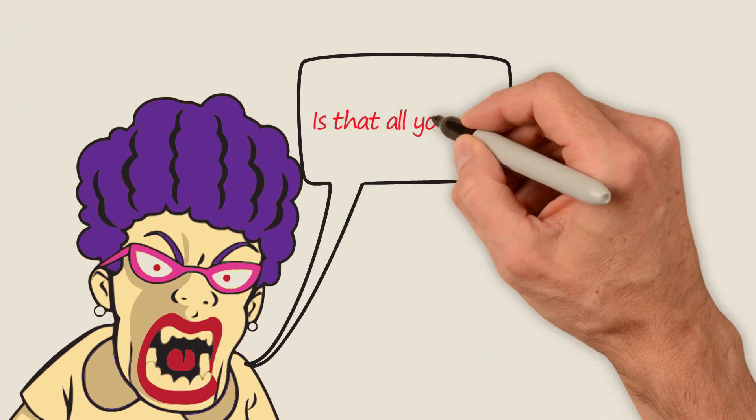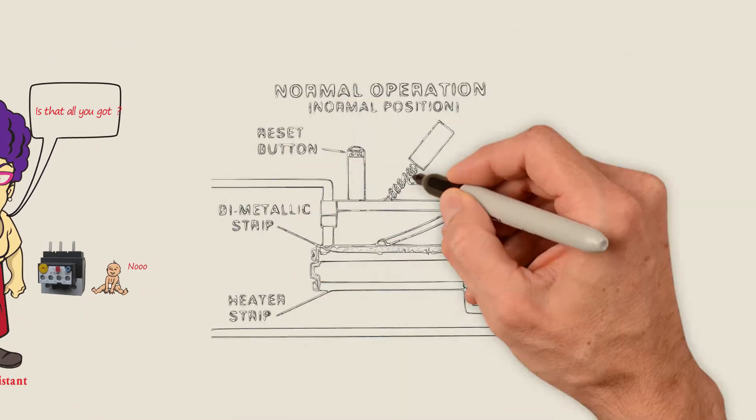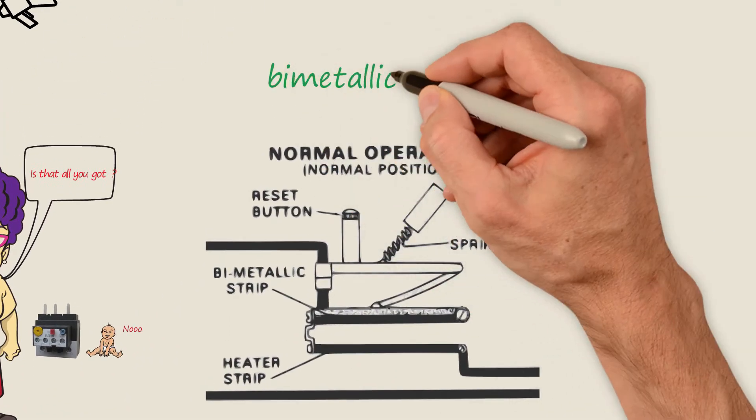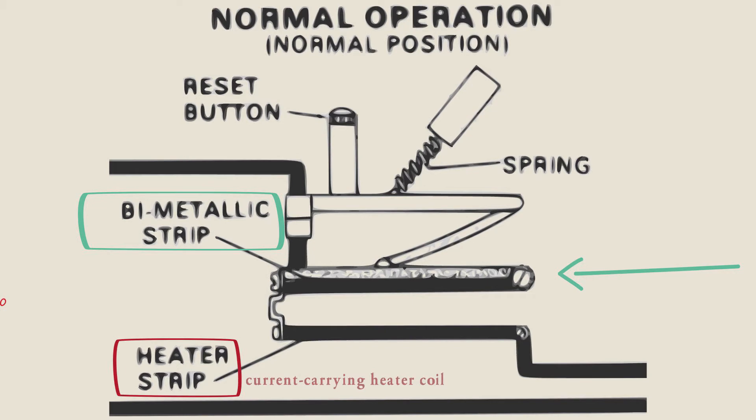Is that all you got? No. Another extremely common thermal mechanism is a bi-metallic strip. This design uses a bi-metal strip connected with a current-carrying heater coil.